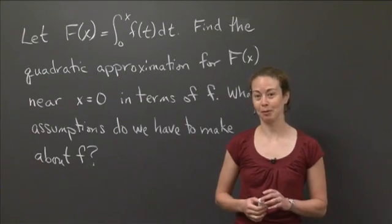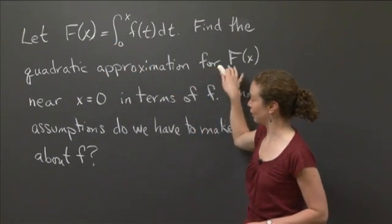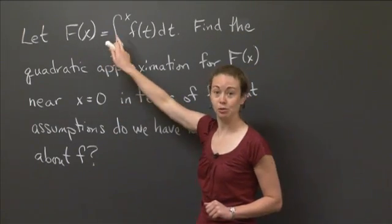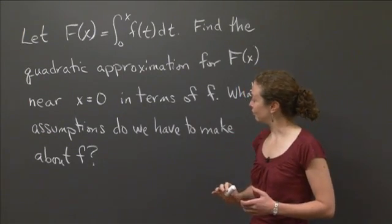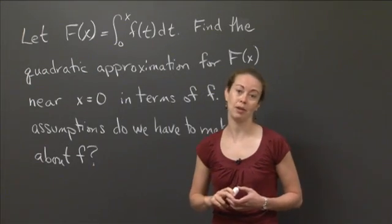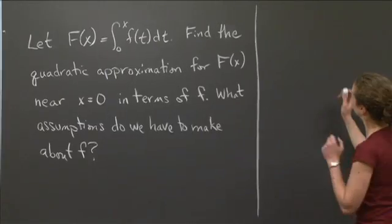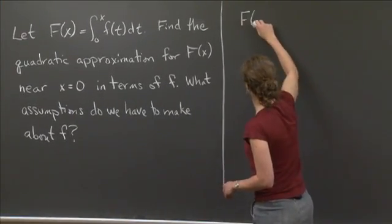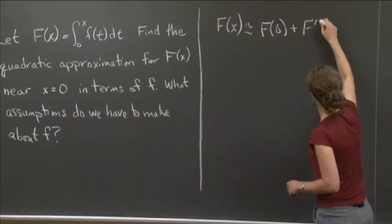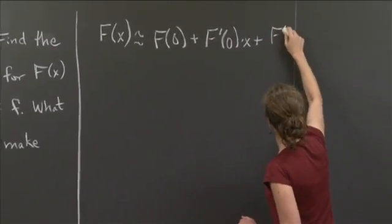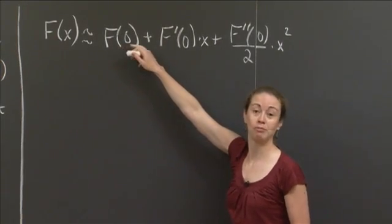Welcome back. Hopefully you were able to make some good headway with this problem. So again, what we're trying to do is we've defined capital F, and we want to find the quadratic approximation for it near x equals 0 in terms of little f, knowing that capital F of x is equal to the integral from 0 to x of little f of t dt. To start off, let me remind us what the quadratic approximation for capital F is just in terms of itself. So the quadratic approximation near x equals 0 gives us: F of x is approximately F of 0 plus F prime of 0 times x plus F double prime of 0 over 2 times x squared.